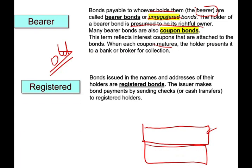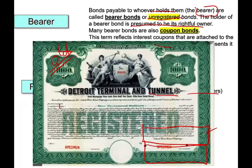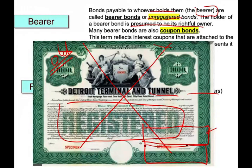Versus a registered bond, which is registered in the name and address of the holder. Your bond is computerized — even if you lose it, it doesn't matter because your name, social security number, and address are registered with the issuing company. The issuer makes payment by sending a check or transferring cash to your bank account. Usually a registered bond is printed on a register, but no one uses registered bonds anymore — it's just a computerized entry.